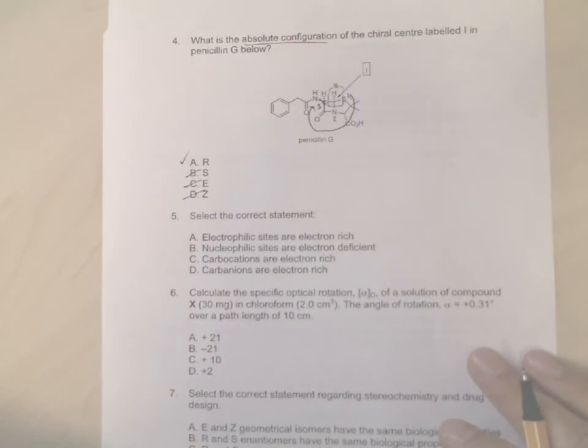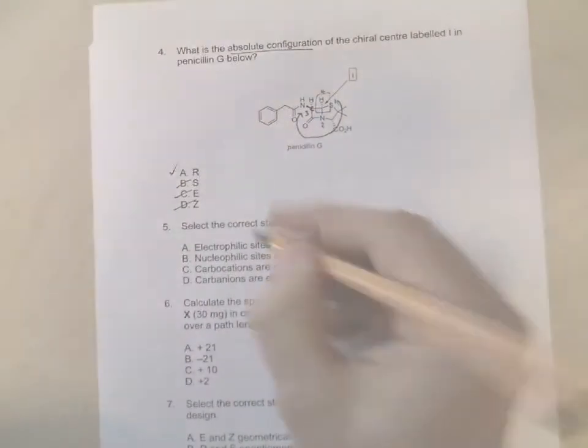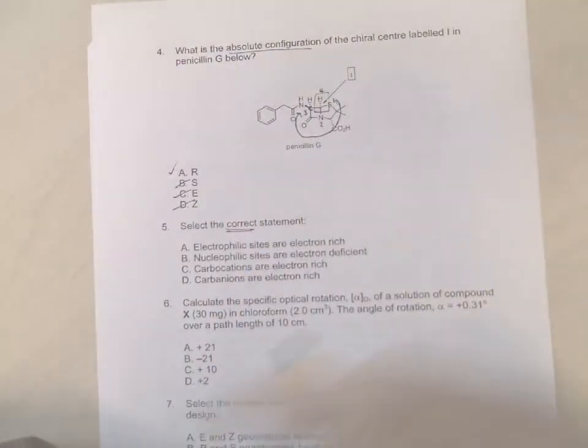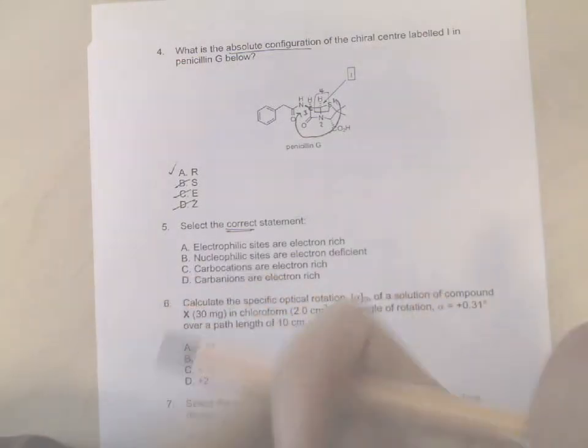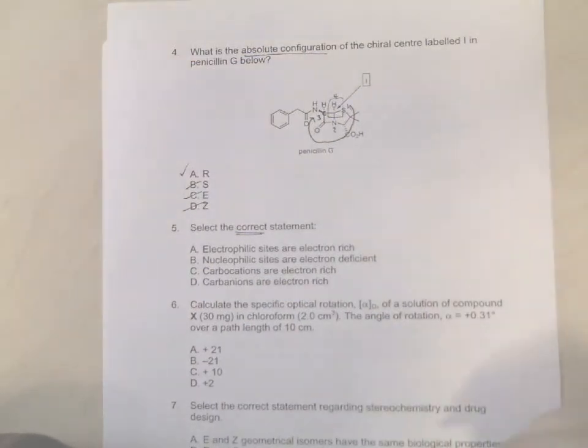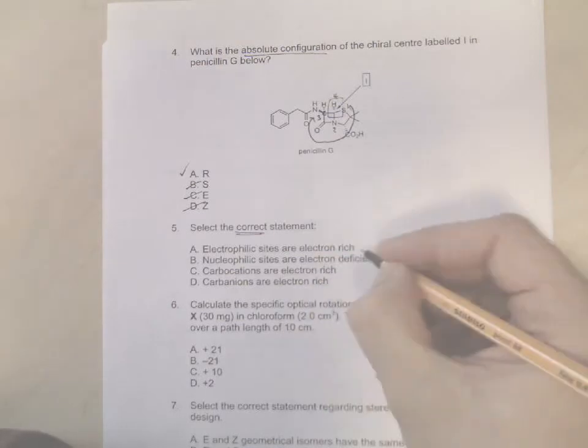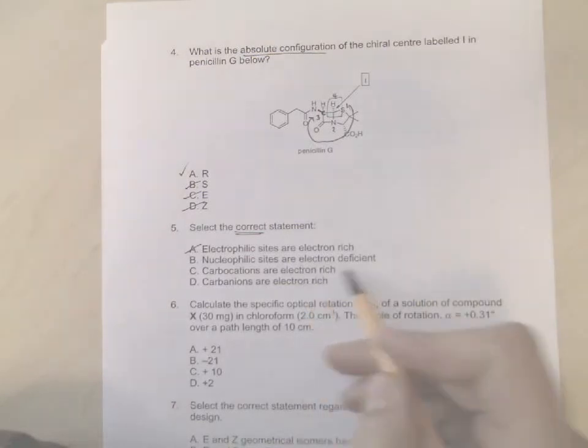Question five: Select the correct statement. So just work through each one to see if it's correct or not. Remember we're looking for the correct statement. Electrophilic sites - remember an electrophile likes electrons. Electrons are negatively charged, so if something likes negative charge, it itself must be positive or partially positive. So electrophiles have electron deficiency, so therefore they are not electron rich. So that's wrong.